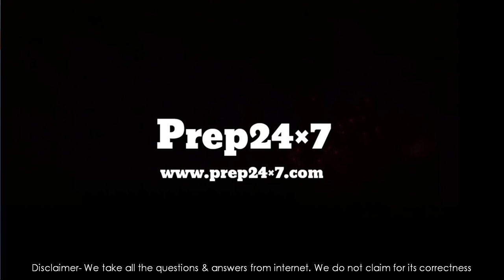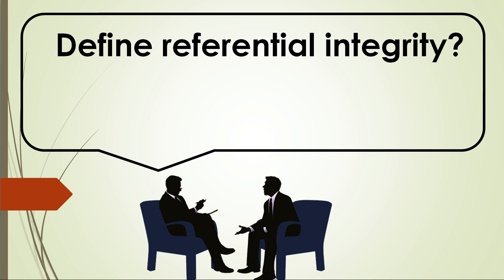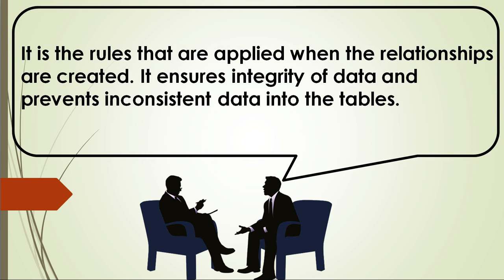Welcome to property 4 into 7. Let's start with our question: define referential integrity. The answer is: it is the rules that are applied when the relationships are created. It ensures integrity of data and prevents inconsistent data into the tables.